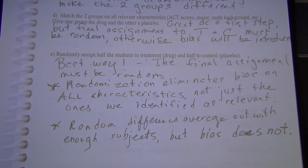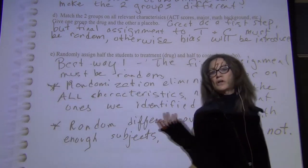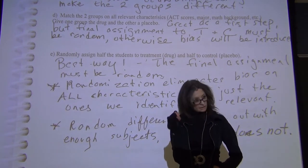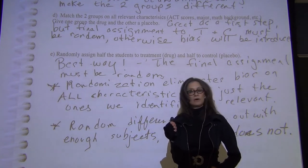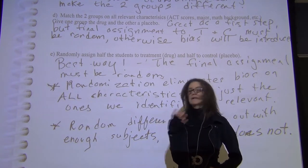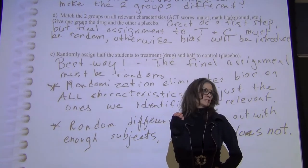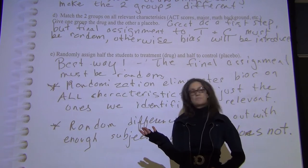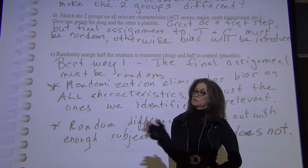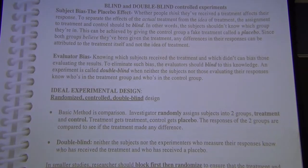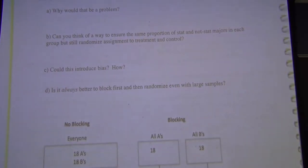In medicine, even huge randomized controlled trials (RCTs) block on what's really important to reduce variation between groups — but the last step is always random. If something's important, like equal numbers of males and females, you block first and then randomize.